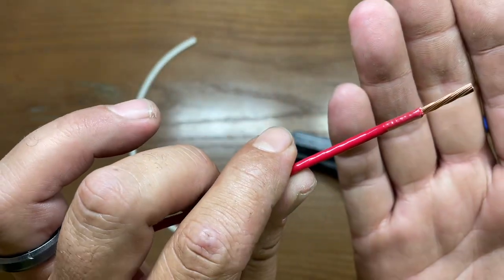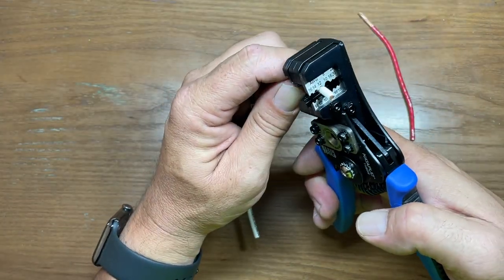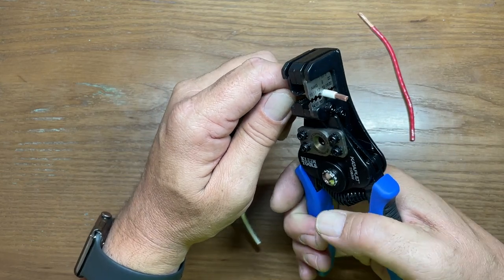But it made a very nice, clean cut around that insulation. Same is true for all the gauges of wire. They're just spaced perfectly. Set it, pull, and it strips right off.